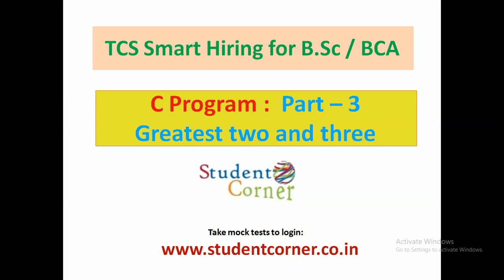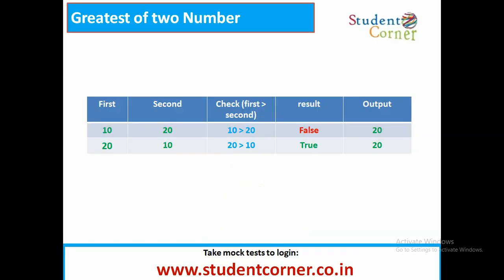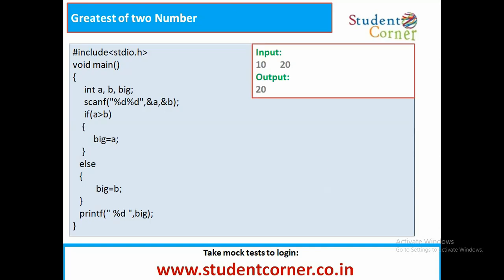Participate seriously for your career. Coming to this section, we need to discuss greatest of two numbers. We take first number as 10 and second number as 20. We need to check the relation: first greater than second - 10 greater than 20 is false, so the output will return 20. If first number is 20 and second is 10, then 20 greater than 10 is true, so the greatest number 20 will be printed. Logically, we read two values: if A greater than B, big equals A, else big equals B, then print big.